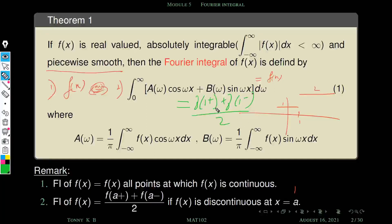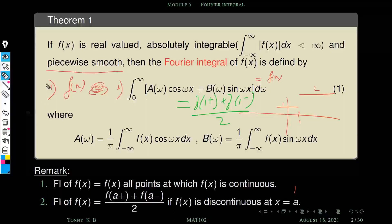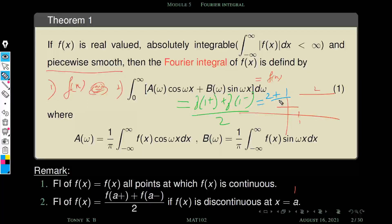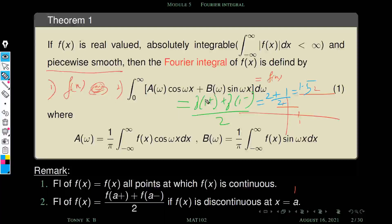f(1⁺) means the right-hand limit at x = 1. When approaching 1 from the right, the limiting value is 2. So 2 plus f(1⁻) — the left-hand limit — which is 1, divided by 2, gives 1.5. So when x = 1, substituting into the Fourier integral representation gives 1.5; otherwise its value is the same as the given function.